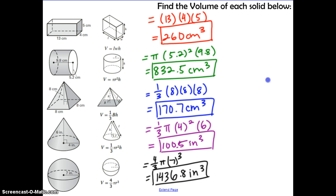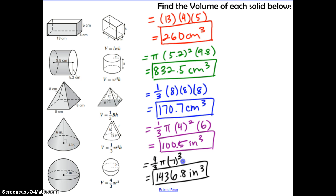The process for finding volume is very similar to surface area: identify your three-dimensional figure, match it with the one on the formula sheet, and use the diagram to substitute in the correct measurements — whether it be radius, height, length, width, base, or perimeter. Make sure you put it into the calculator correctly. Be very careful when entering fractions — they should always be entered in parentheses, or convert to a decimal first and then multiply through.